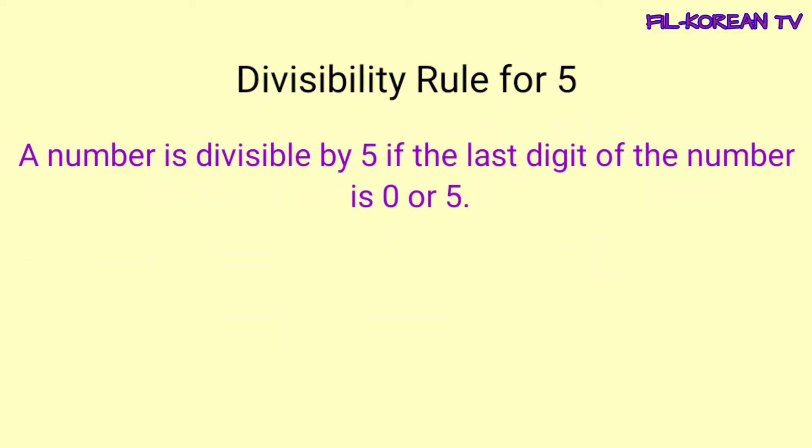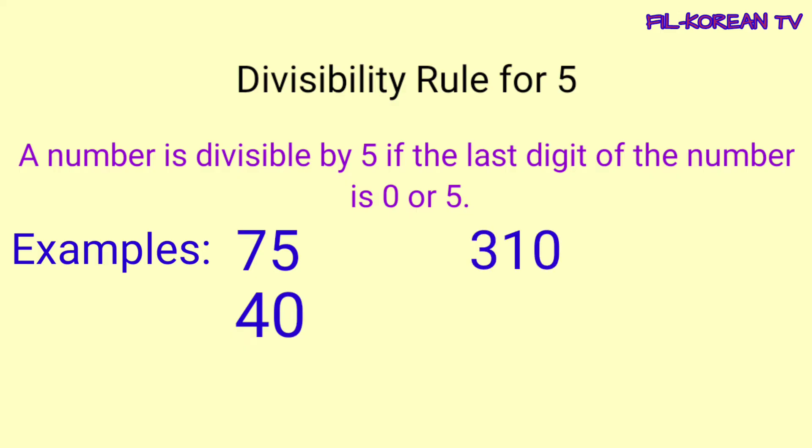Ngayon, alamin naman natin ang divisibility rule for 5. A number is divisible by 5 if the last digit of the number is 0 or 5. Masasabi natin na ang isang number ay divisible by 5 kapag ang last digit o yung last na numero ay 0 o 5. Examples: 75, 40, 310, and 125. Ang mga ito ay divisible by 5 kasi yung last digit nila ay 0 o 5.